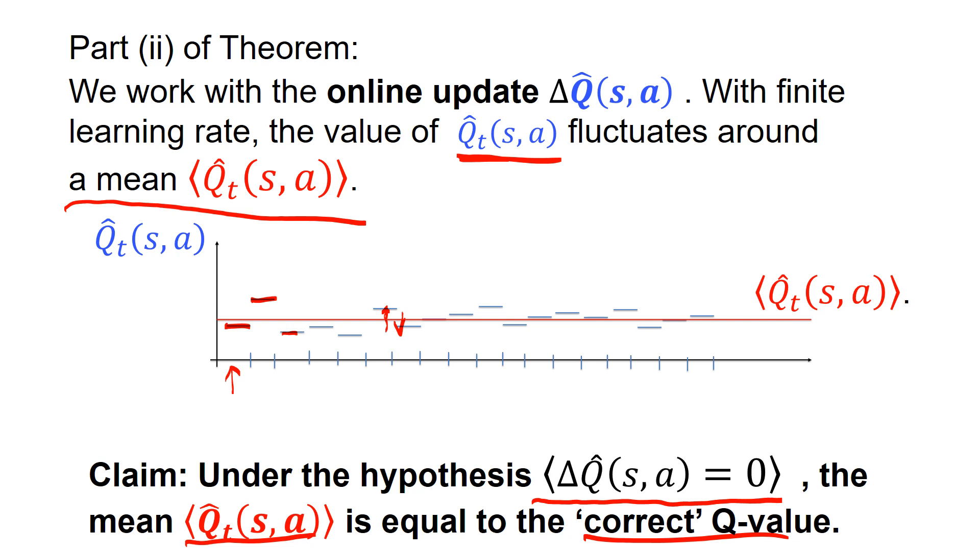So now this is really this temporal mean, which is the red line, the thin red line that I've drawn sort of by eye. This temporal mean is then the correct Q value. And this is an additional little calculation that I would like to perform here.